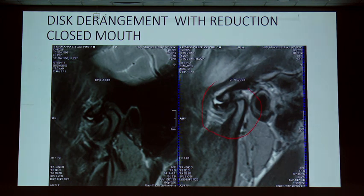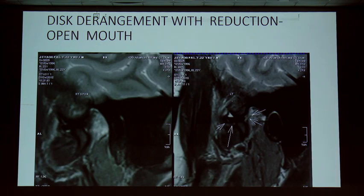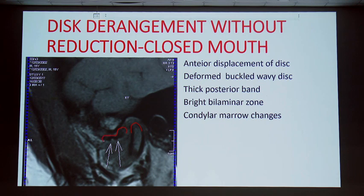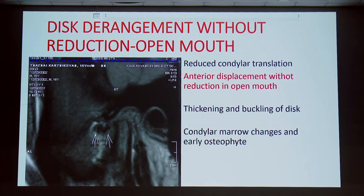In closed mouth position the disc is displaced anteriorly. When the mouth is opened, it returns to its original position — this is disc derangement with reduction. When it does not go back to its original position on mouth opening, it is disc derangement without reduction. In the without-reduction case, the disc is thickened, anteriorly displaced, deformed, buckled with a wavy appearance, with bright signals in the bilaminar zone, and reduced condylar translation is also noted.